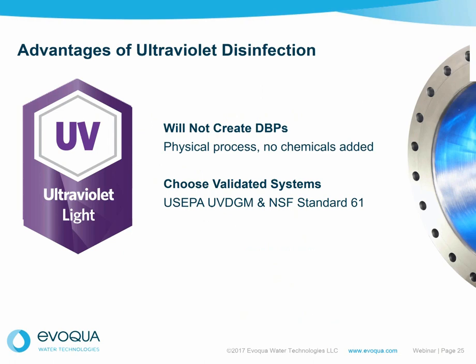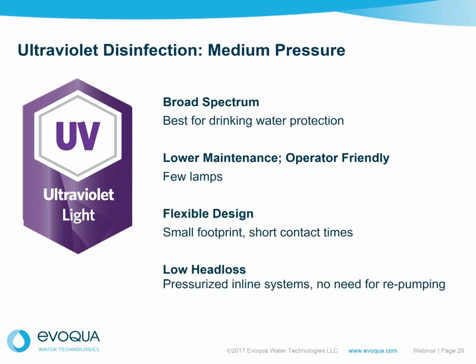UV does not create disinfection byproducts. It's a physical process — elegant, simple, non-intrusive, with no chemical added and no chemical change at a disinfection-level dose. The systems are validated in accordance with the EPA protocol, and NSF has a standard for UV. Various reuse markets hold different standards. Medium pressure systems are typically used for drinking water. The delivered dose is very low, the footprint is very small, systems use very few lamps, they can be monitored and wiped, and the contact time might be a fraction of a second. They are suitable for gravity flows or pressurized lines, and the head loss is very low.